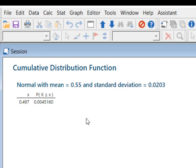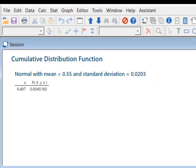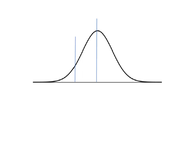So what does that look like on our curve? What that looks like on our curve is that I have 0.0045 here, which is the probability that P hat is less than 0.497.